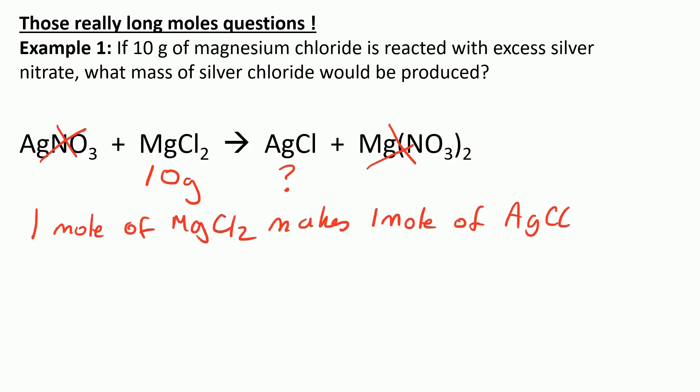We then write a sentence to describe the ratios of reactants to products. In this case there are no numbers in front of MgCl2 or AgCl, so just one mole of MgCl2 makes one mole of AgCl. We then need to work out how many moles of MgCl2 we've got. If we had 5 moles of it, it would make 5 moles of AgCl. If we had 10 moles of MgCl2, it would make 10 moles of AgCl.